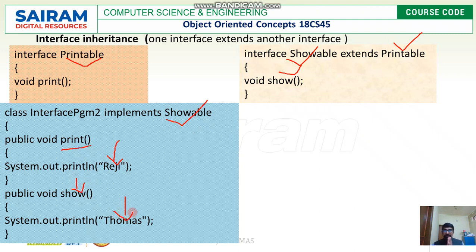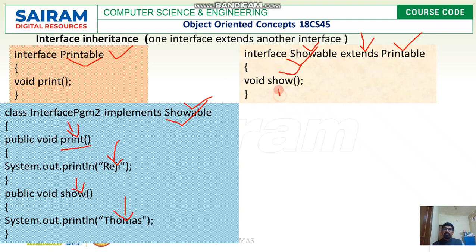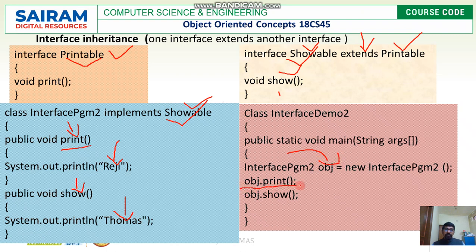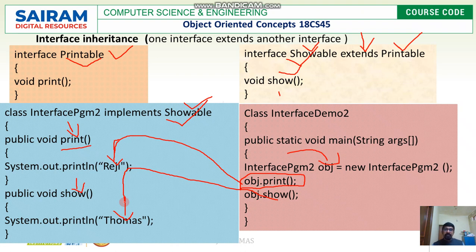So we have interface printable as the super interface, and interface showable extending it as the sub interface. The class implements showable and must implement both methods: print and show. In the main program we create an object of this class, and using this object we access both methods — obj.print prints reji, and obj.show prints thomas.